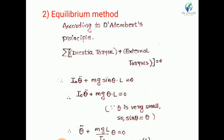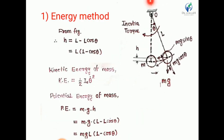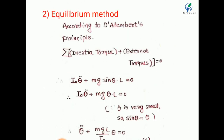Now we look at the equilibrium method using D'Alembert's principle. According to D'Alembert's principle, the summation of total forces acting on the system should be zero for equilibrium. In our case, there are two types of forces acting on the pendulum: the inertia torque and the resisting torque due to mg. The equation is: summation of inertia torque plus external torque equals zero.